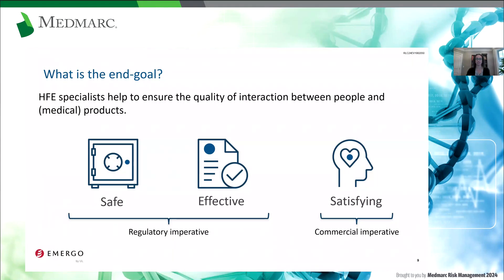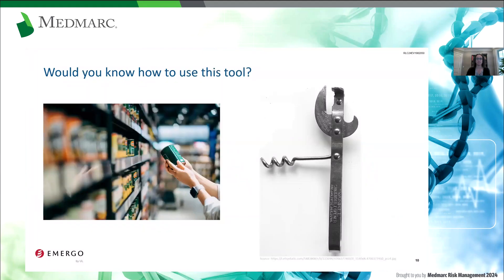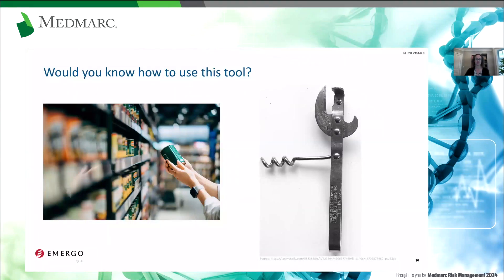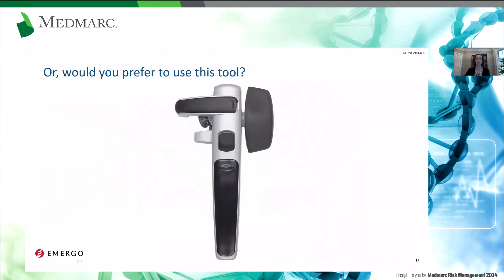If you think about how human factors shows up in everyday use, you might think about the task of opening a can. You have a can from the store, you need to open it. This is a tool you could use — it is a can opener. How many people have this product and how many people maybe have a scar on their palm from trying to wrangle that corkscrew while holding the handle? We see human factors concerns in everyday products, and we also see human factors successes.